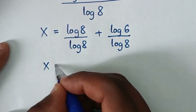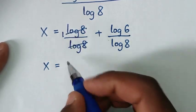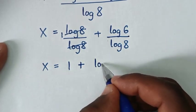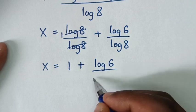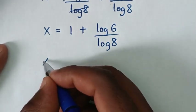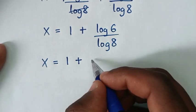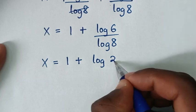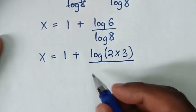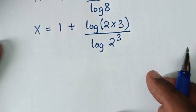Then it will be x is equal to log of 8 divided by log of 8, which is 1, so it will be 1 plus log of 6 over log of 8. In the next step, x is equal to 1 plus log of 6, where log of 6 is the same as log of 2 times 3, and log of 8 is the same as log of 2 power 3.